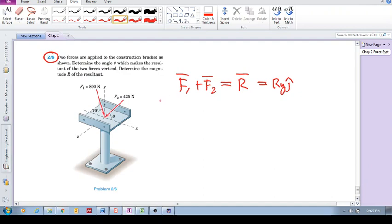So let's break up this guy, F1, into its vector, into I's and J's. How's it going to work? So in the X direction we're going to have 800 cos of 70 and it's going to be plus.